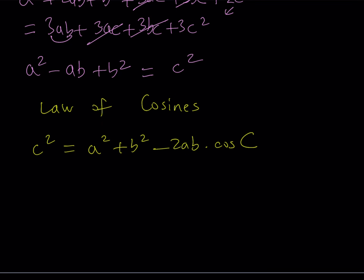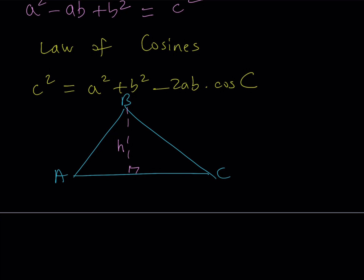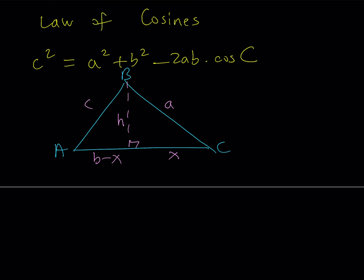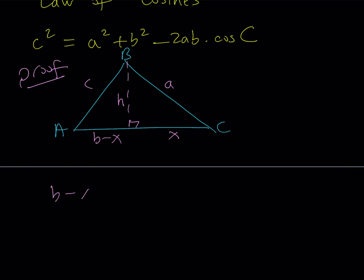Now let's take a look at why this works — I'll provide a quick proof for an acute angle, and you can do the same thing for an obtuse angle. Suppose this is our triangle ABC, and I'm going to draw the height — let's call that H. So this side is A, this side is C, and if we call this segment X, then the whole side AC is B, making the other segment B minus X. I'm going to use the Pythagorean theorem. So I get: B minus X quantity squared plus H squared equals C squared.